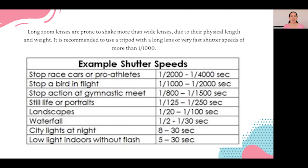For night photography — getting pictures of traffic light trails and cars — you're going to want between 8 seconds and 30 seconds, again depending on the light in your environment.